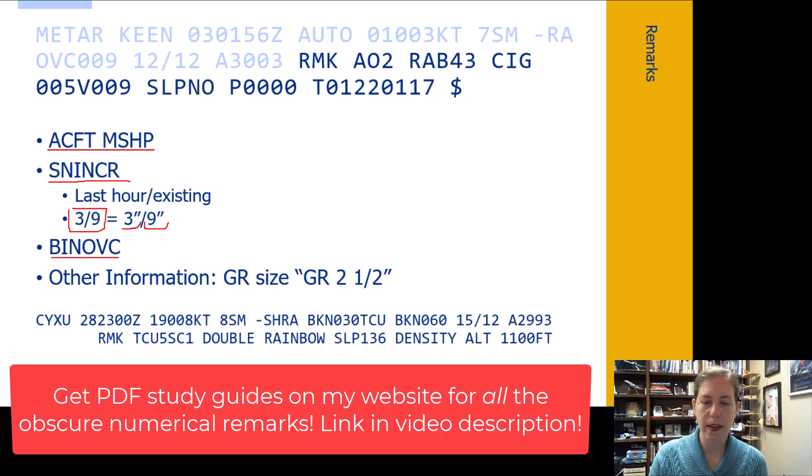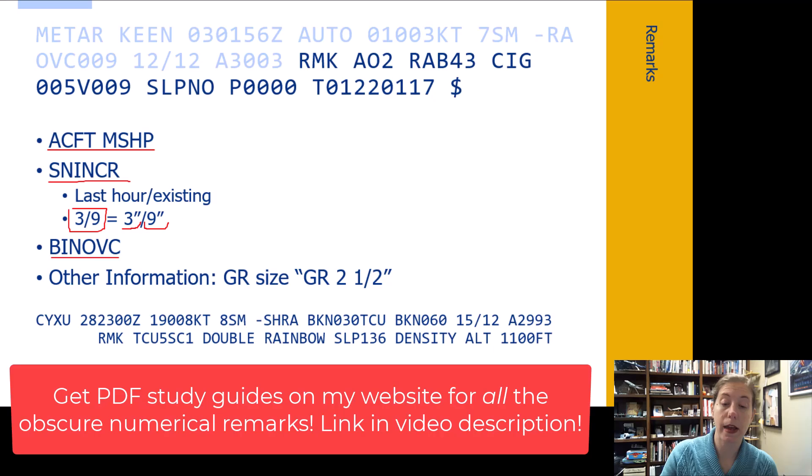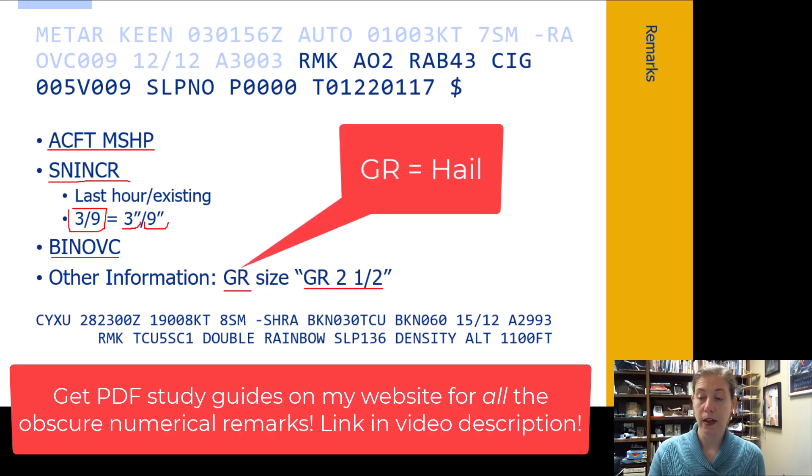BANOVC that's breaks in overcast. So if you see a layer of clouds, a nice thick layer, but then you have little breaks of blue sky that may be coded as breaks in overcast. A human station may add this information breaks in overcast. They're going to provide hail information. So if we have hail happening, they're going to tell you a size two and a half inch hail. I am very worried about my car in the parking lot.